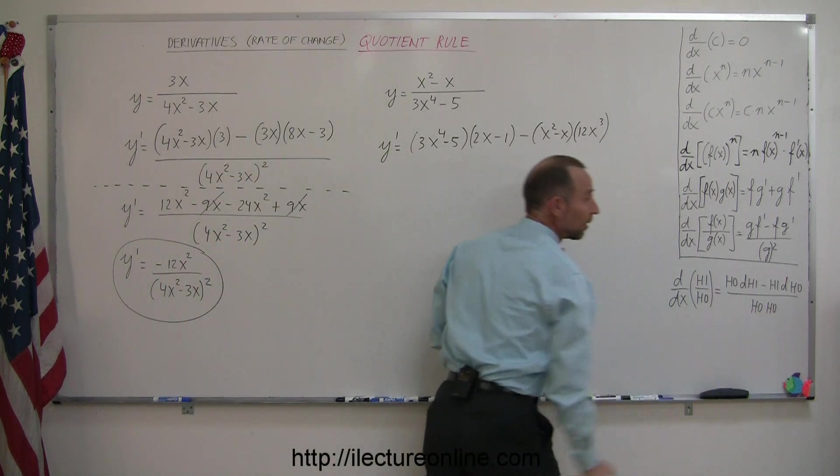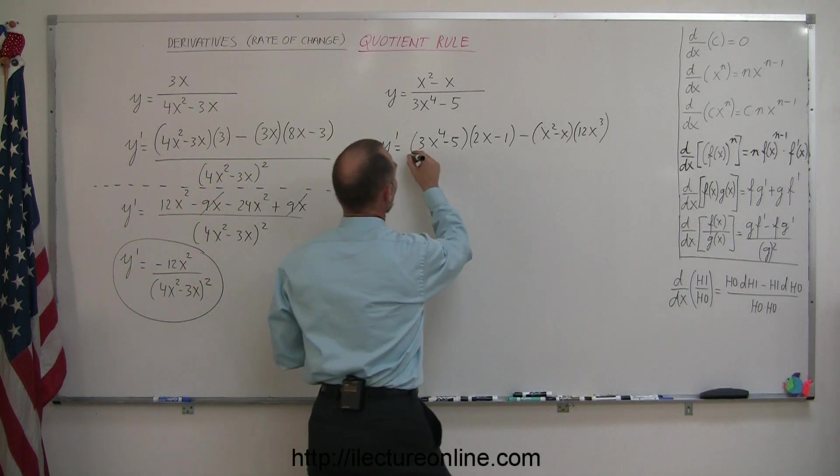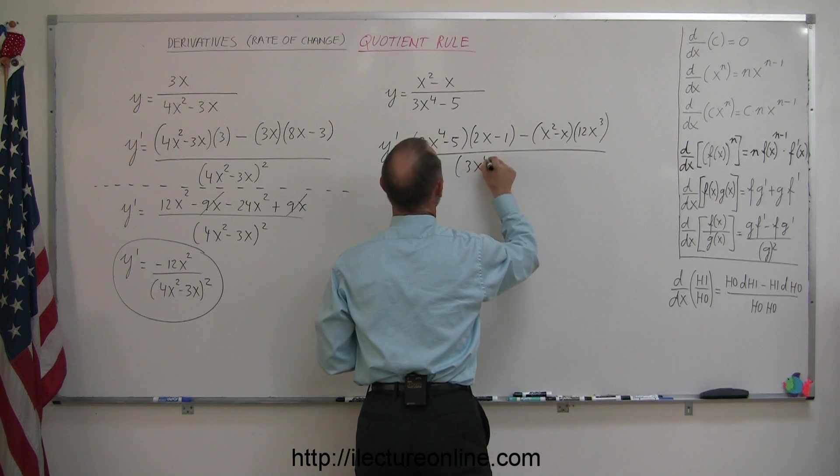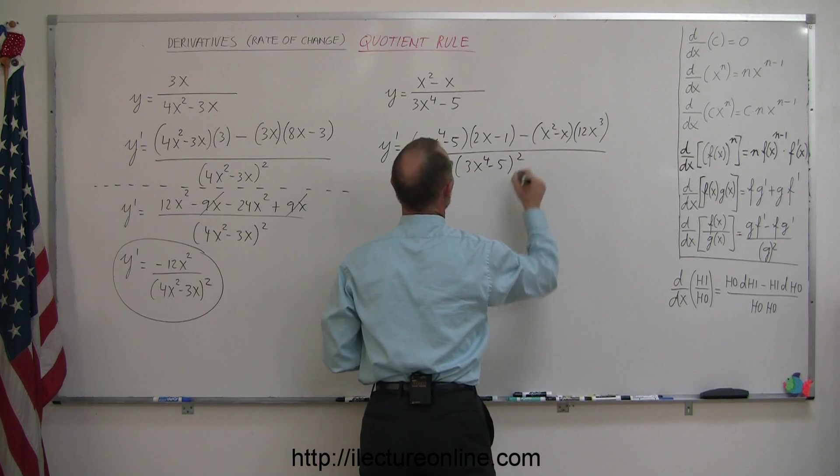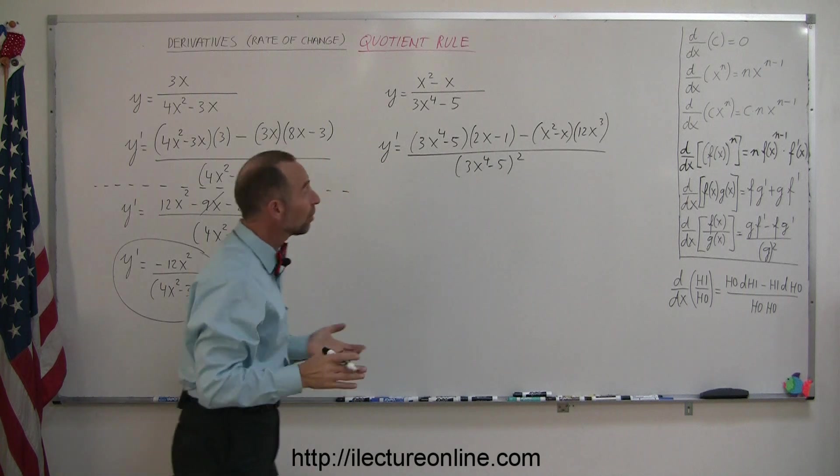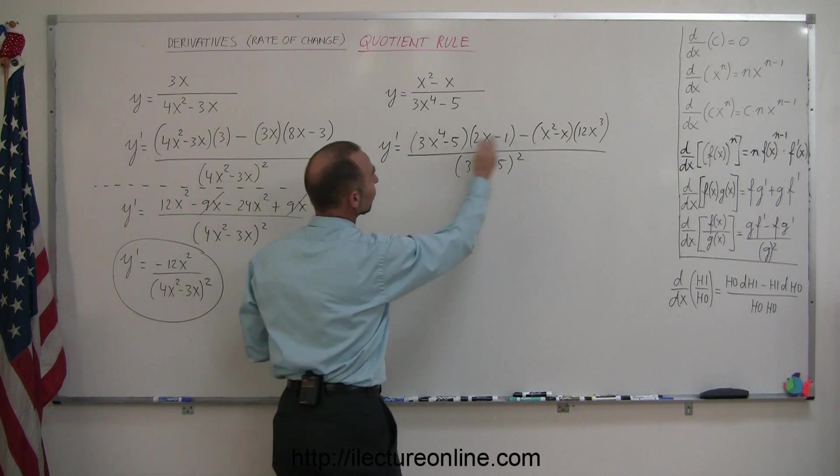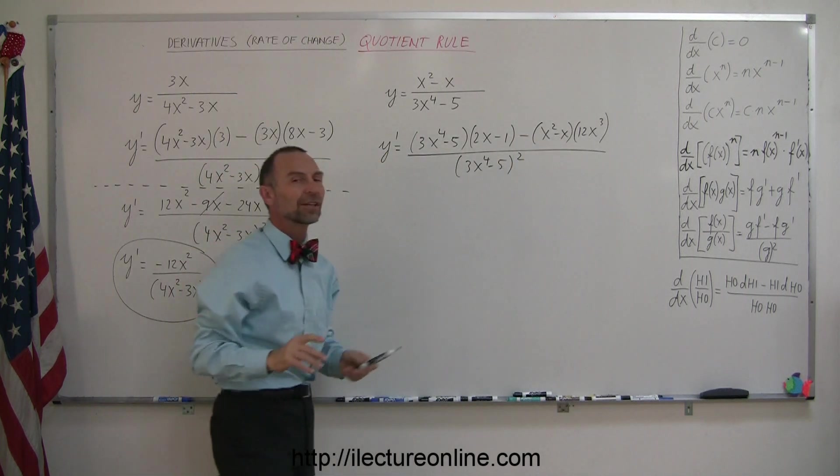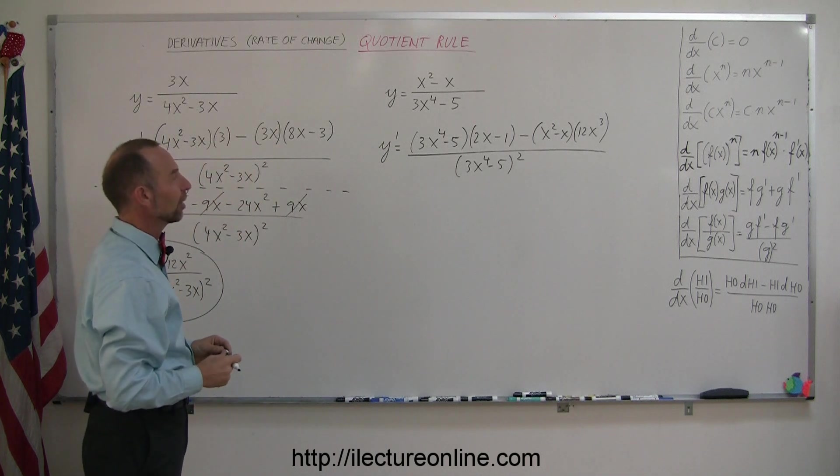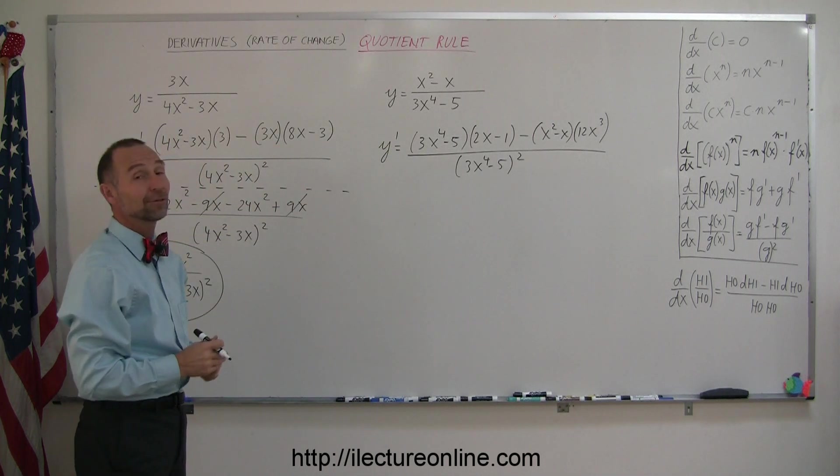Divide the whole thing by ho-ho, the denominator squared, so we take (3x⁴ - 5)². If you want to simplify, multiply everything out and collect common terms. We'll just leave it at that. That's just an exercise in algebra. At least you know how to find the derivative of a quotient using the quotient rule.